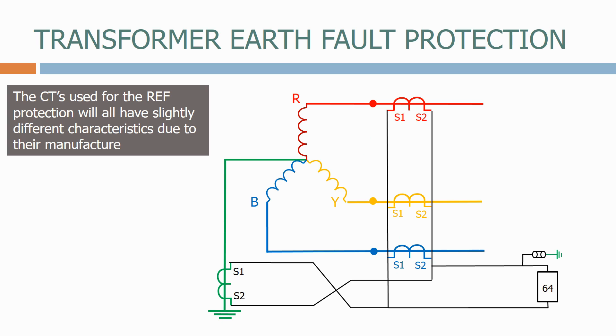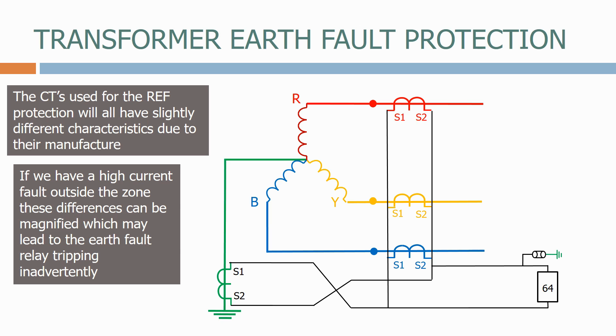The CTs used for the restricted earth fault protection will all have slightly different characteristics due to their manufacture. If we have a high current fault outside the zone, these differences can be magnified, which may lead to the earth fault relay tripping inadvertently.